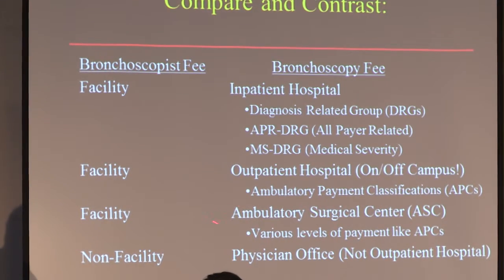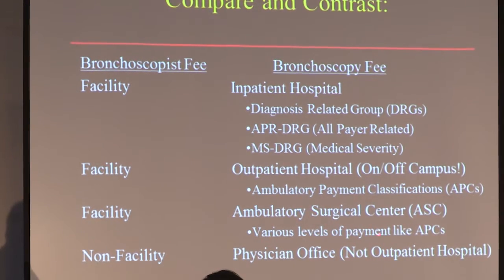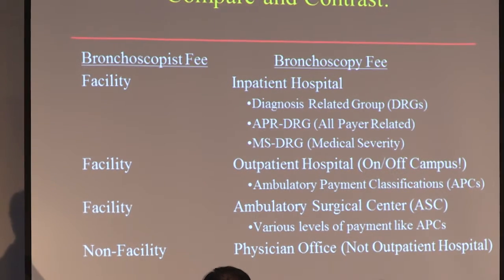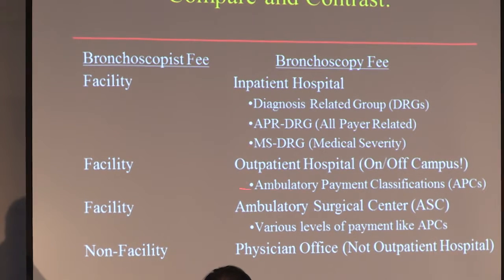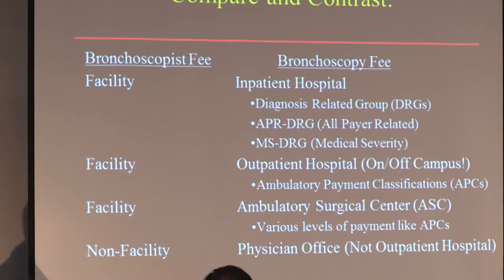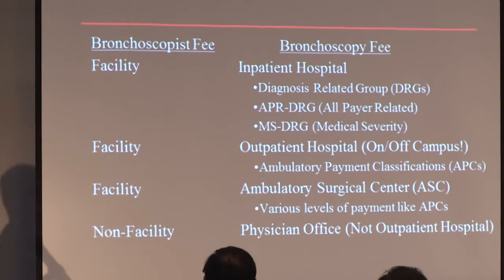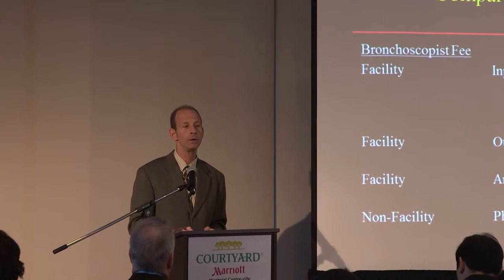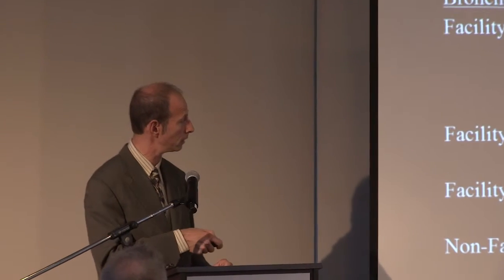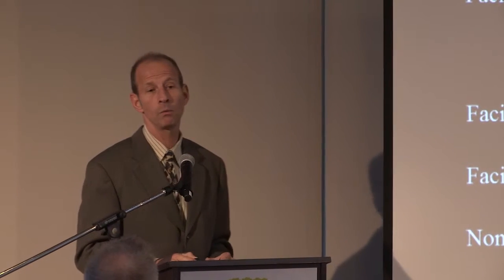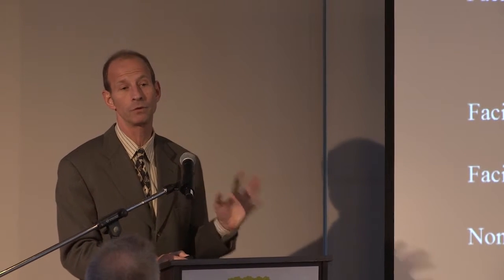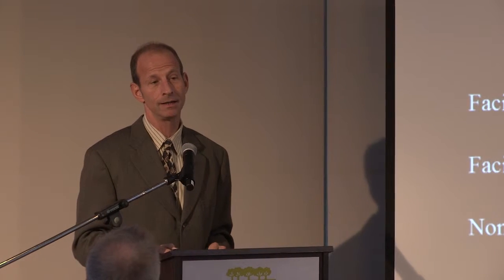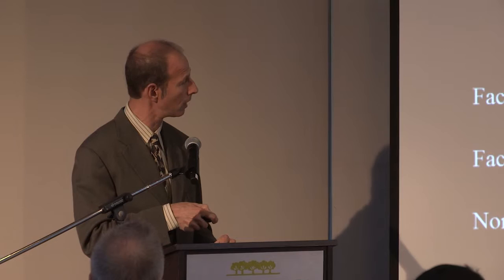The physician fee schedule pays our fees regardless of where we perform the bronchoscopy, as well as the technical portion if we do a bronchoscopy in a true physician office. There is a separate pool of dollars that pays ambulatory surgical centers. The outpatient hospital system is run by ambulatory payment classifications, or APCs — about 600 of these, compared to about 700 DRGs. Beginning January 1, Medicare is requiring institutions to have a separate modifier for whether that clinic is on or off campus, geographically disparate from the hospital campus, to track those different types of payments better.